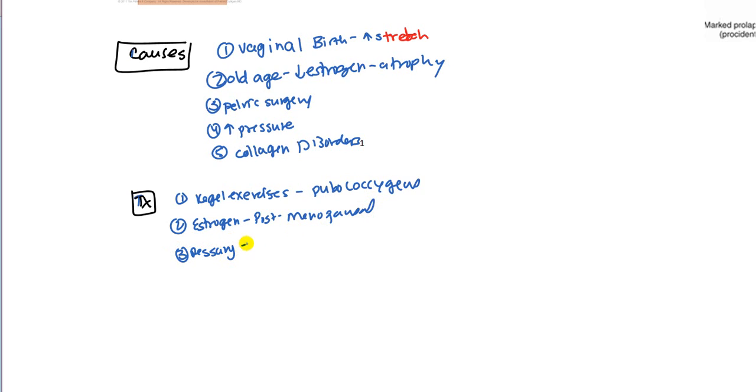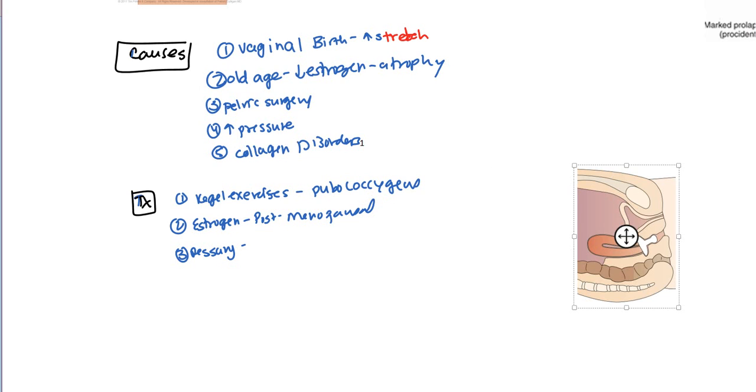Finally, you can also give something called a pessary. What a pessary does is it's a little object which you insert into the vagina and it keeps everything up. As you can see, here's your pessary. It's like a stopcock. It keeps everything there and prevents it from going down. And finally, if all those fail, you'll do surgery. You're primarily going to do a hysterectomy, because if there is no uterus, then how can it fall? Also, if it's a cystocele, you're going to want to repair the anterior wall. And if it's a rectocele, you're going to want to repair the posterior wall.